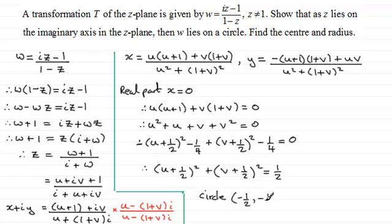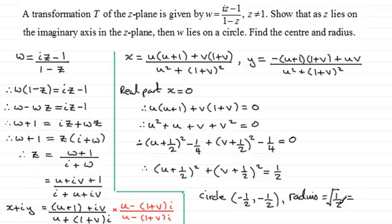This is the equation of a circle with centre at minus a half, minus a half, and the radius equals the square root of one half, which is the same as 1 over root two, or rationalising gives root two over two.